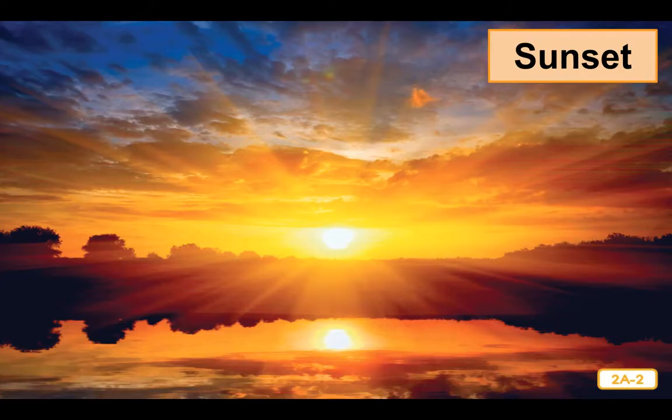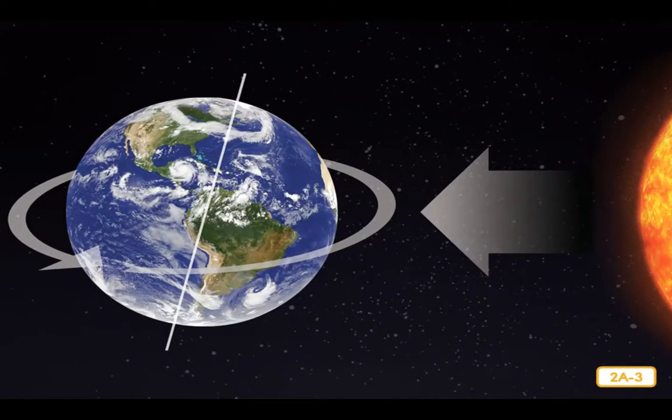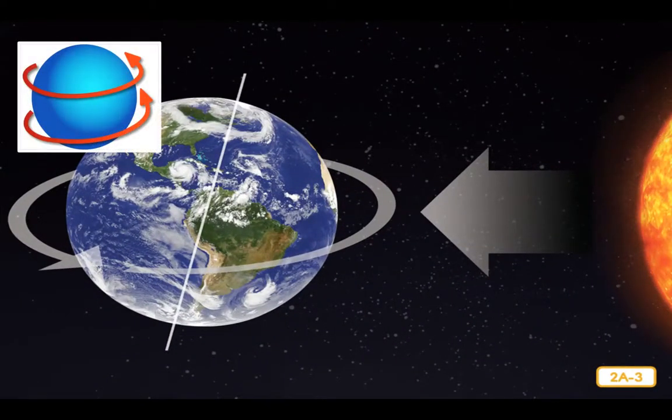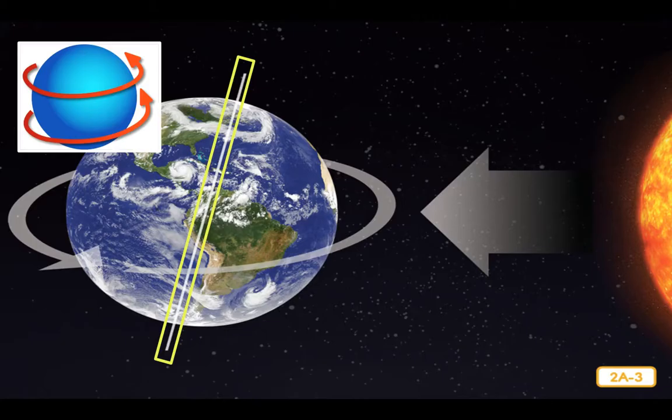Earth rotates or spins on its axis. Imagine the Earth's axis as an imaginary pole sticking through the center of the planet from north to south. It takes 24 hours or one day for the Earth to spin or rotate all the way around one time.